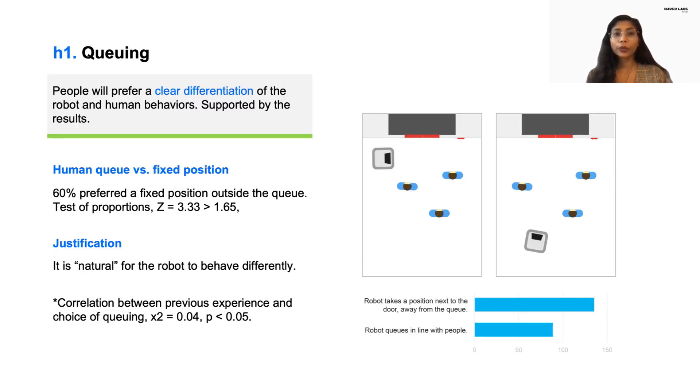For queuing, as shown in the figure, we presented two animations. The first one showed the robot taking place among people in an unstructured queue to wait for the elevator, and the second one showed the robot taking a fixed position next to the elevator door. 60% of our participants preferred that a robot takes a fixed position rather than queuing and waiting in a constantly evolving human line. We can validate our first hypothesis based on a test of proportions.